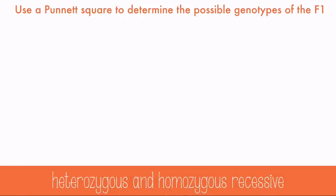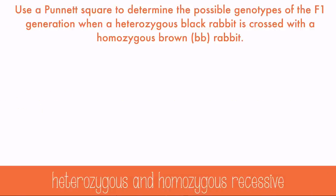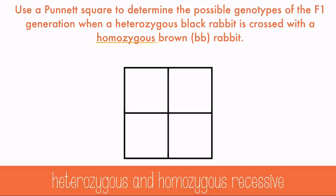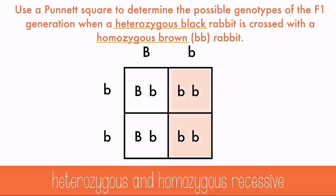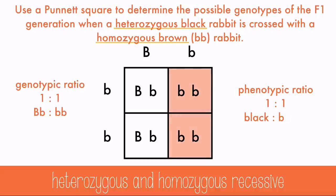Use a Punnett Square to determine the possible genotypes of the F1 generation when a heterozygous black rabbit is crossed with a homozygous brown rabbit. Since brown is recessive, we know that black must be the dominant color. Crossing the heterozygous and the homozygous recessive, you get a 1-to-1 ratio of heterozygous to homozygous recessive, which means a 50% black and 50% brown result.